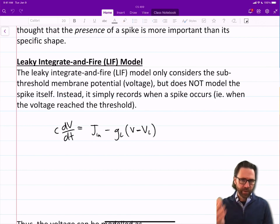And it records, so built into the model has to be some other mechanism to record when a spike occurred.